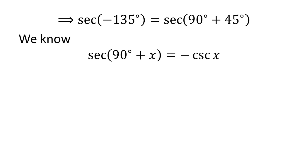As we know, the trigonometry identity secant of 90 degrees plus x is equal to minus cosecant of x. The video explaining how to derive this identity is appearing in the upper right corner, and the URL address has been mentioned in the description section.